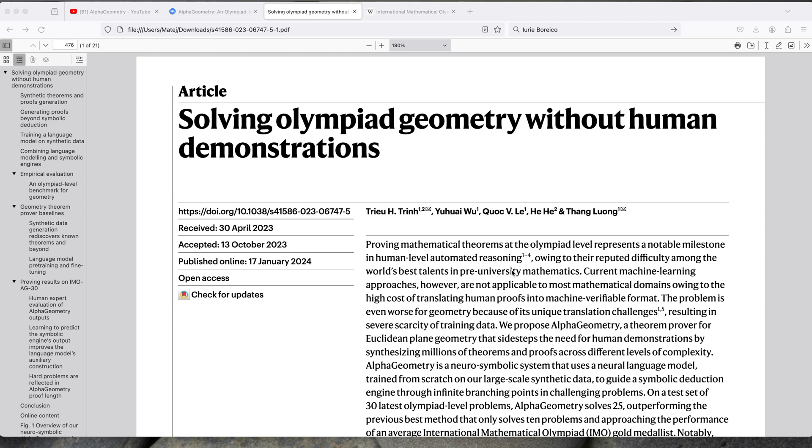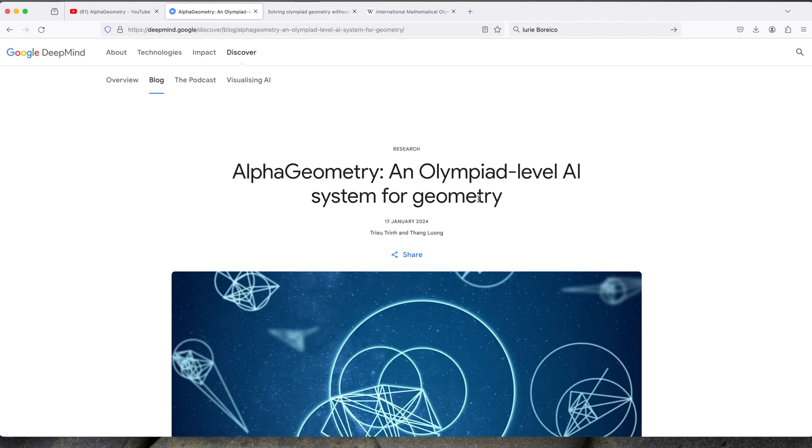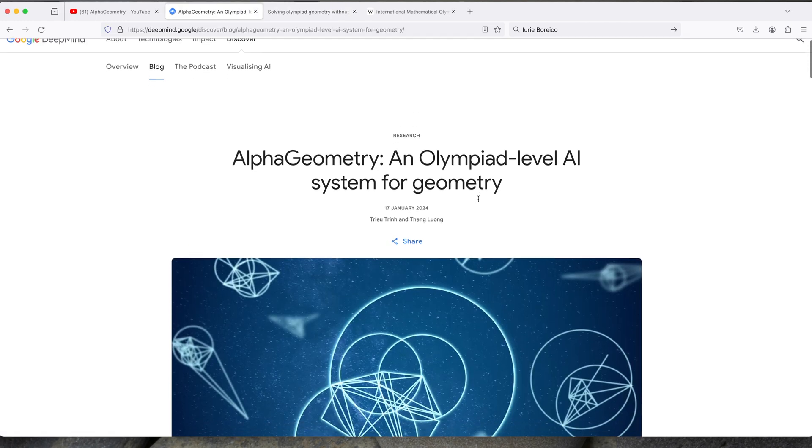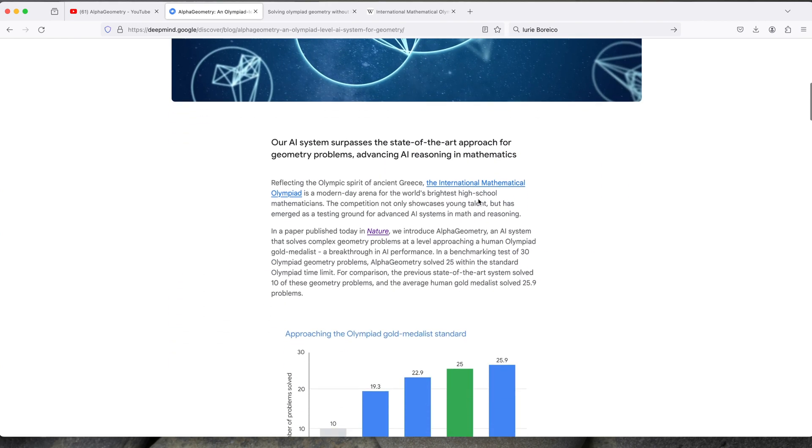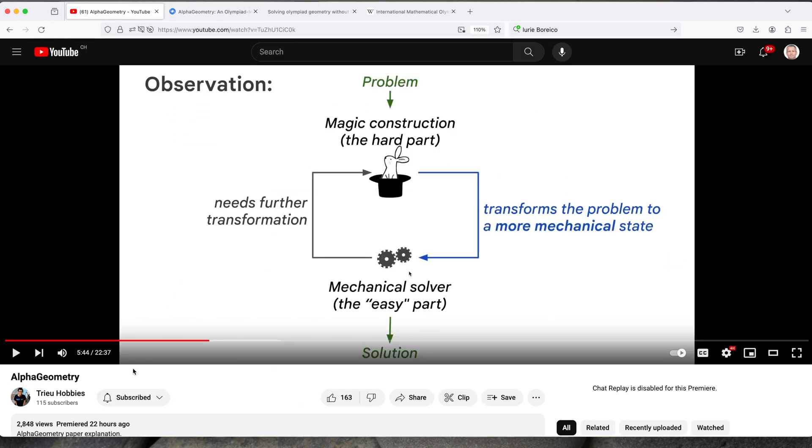If you want more information about this research, I suggest you read the Nature article which was published just this week. There's also a blog published by Google DeepMind on their blog website, which is also a pretty good overview of the research, but I highly recommend this video from the first author of the paper, which is titled AlphaGeometry. I put the link in the description below, which goes really nicely over the concepts. It's 22 minutes long, but if you are really interested in how this thing works, I highly recommend this video.